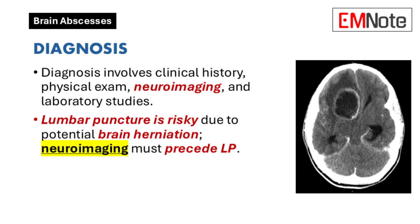Diagnosis begins with a detailed clinical history and physical examination to identify predisposing factors. Neuroimaging and laboratory studies are essential for confirming the diagnosis. A lumbar puncture and cerebrospinal fluid analysis may be performed if the abscess ruptures into the ventricles or if meningitis is suspected. However, this procedure carries a high risk of brain herniation and often yields negative culture results. If a lumbar puncture is considered, neuroimaging must first be conducted to rule out elevated intracranial pressure.